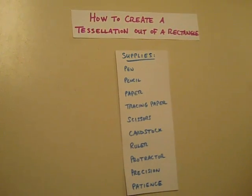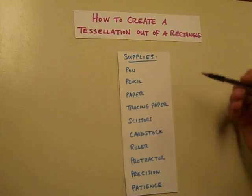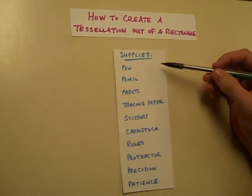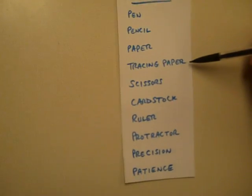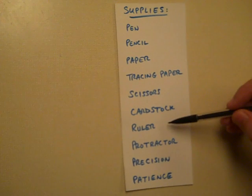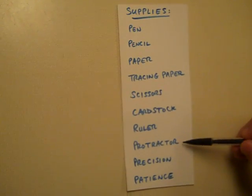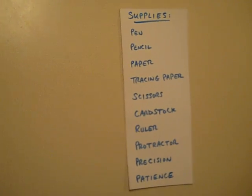Alright, this video I'm going to show you how to create a tessellation out of a rectangle without using a computer. Right here I have a list of supplies. You're definitely going to need a pen, a pencil, some paper, if you have it tracing paper that would be great, definitely need scissors, some card stock, a ruler is probably necessary, a protractor might not be, and you're going to have to have a little precision and some patience.